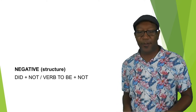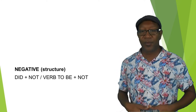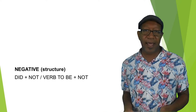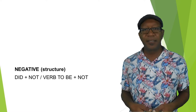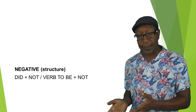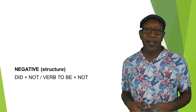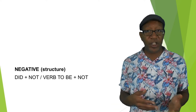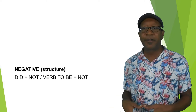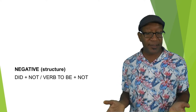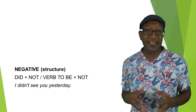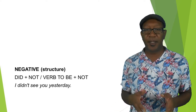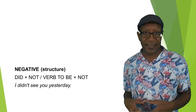To form the negative in the past tense, for most verbs you have to add the auxiliary verb DID plus NOT. For example: 'I didn't see you yesterday.' DID plus NOT can be contracted to DIDN'T. In the case of the verb TO BE, you simply add NOT after it.